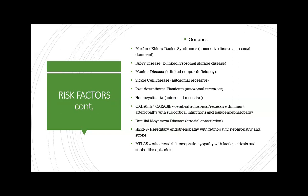For genetics, a small percentage of cases affect our stroke population. These include connective tissue diseases such as Marfan syndrome and Ehlers-Danlos syndrome, as well as autosomal dominant and recessive syndromes such as sickle cell disease and pseudoxanthoma elasticum. We commonly see X-linked lysosomal storage diseases like Fabry disease, and CADASIL/CARASIL, which present with subcortical infarcts and leukoencephalopathy. MELAS — mitochondrial encephalomyopathy with lactic acidosis and stroke-like episodes — is also relevant when considering genetic causes of stroke.